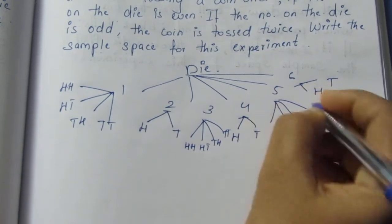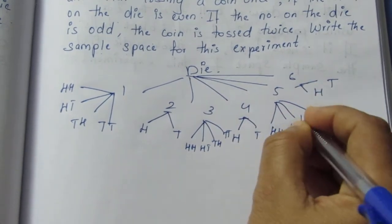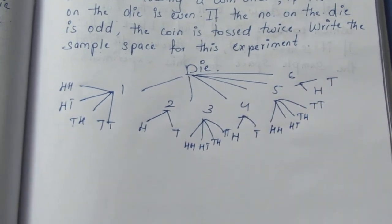5 comes: head head, tail tail, tail head, tail tail. So we have it all here.